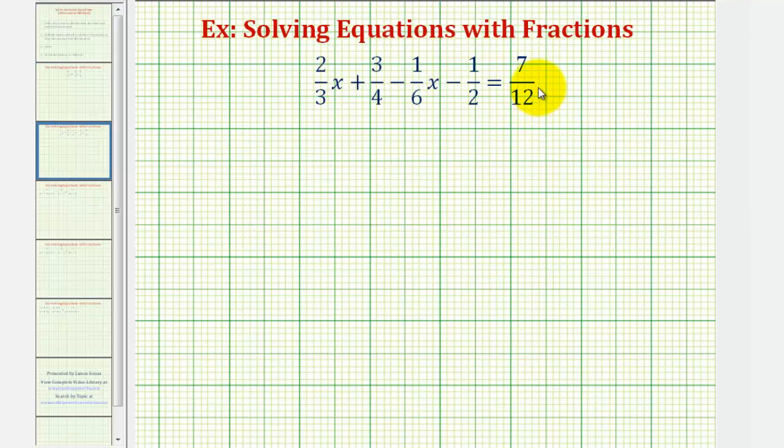So looking at our example, notice how our denominators are 3, 4, 6, 2, and 12. The least common denominator is going to be the least common multiple of all of these numbers, which would also be the smallest number that's divisible by all of them, which means the least common denominator is going to be 12. 12 is the smallest number that's divisible by all of these values.